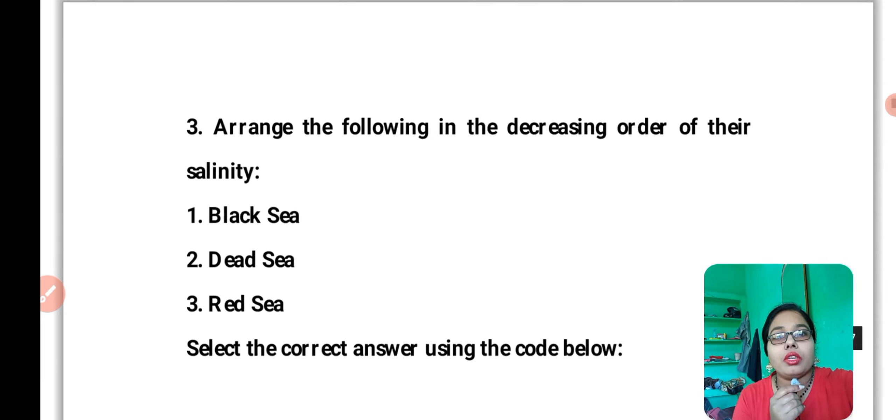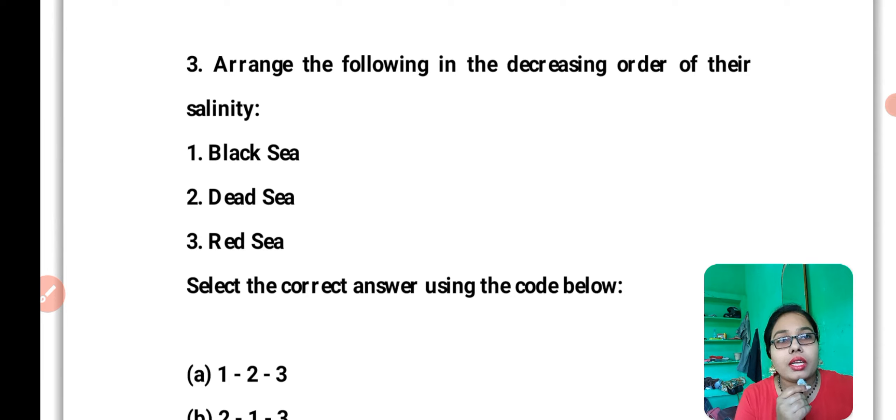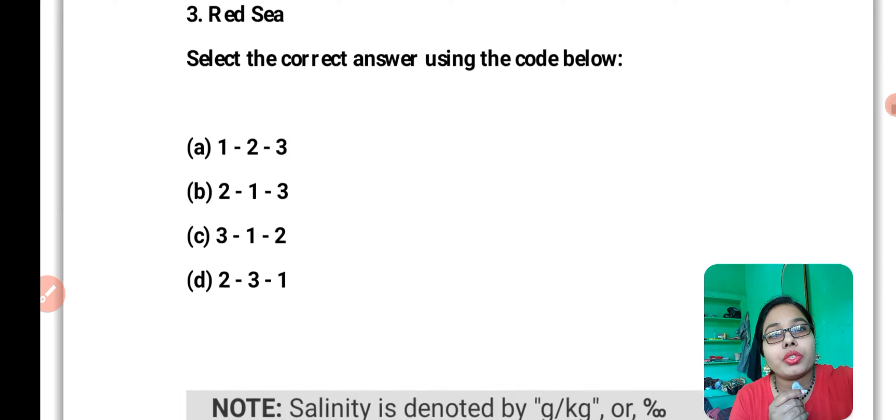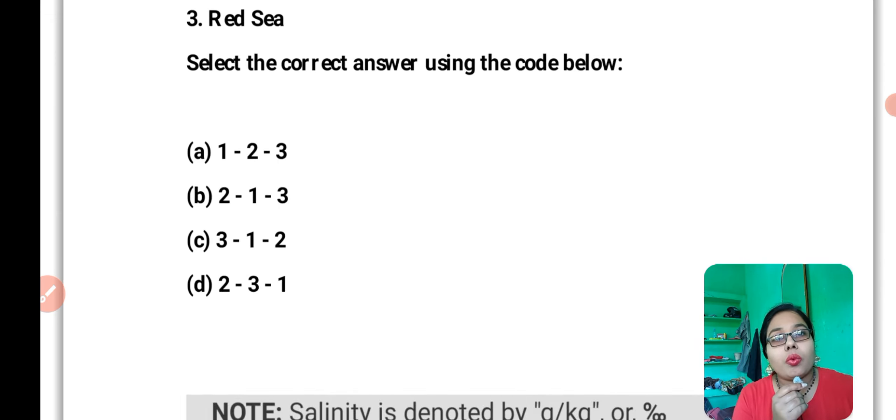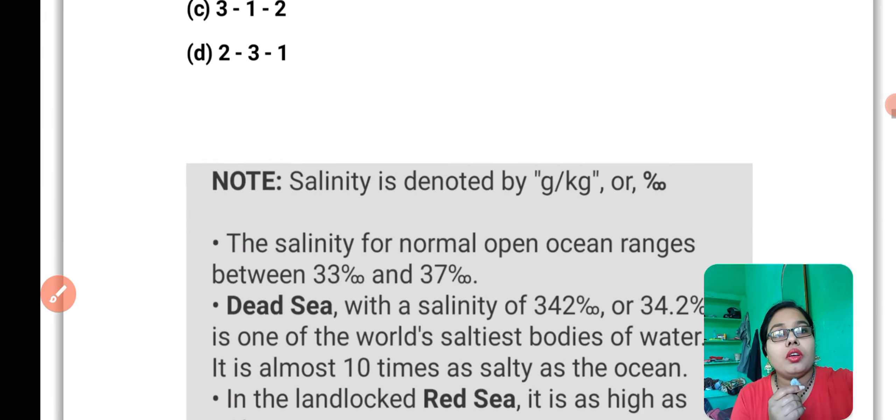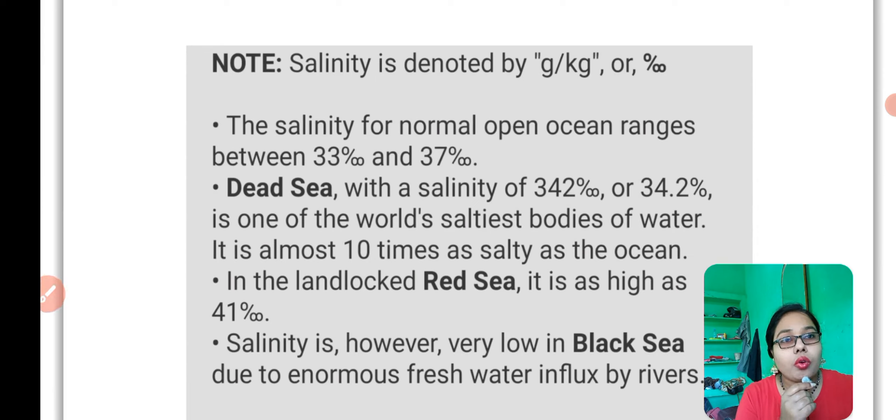Question number 3: Arrange the following in decreasing order of salinity - Dead Sea, Black Sea, and Red Sea. The correct answer is option 2: Dead Sea, Red Sea, then Black Sea. The salinity for normal open ocean ranges between 33% and 37%. Dead Sea with salinity of 34.2% is one of the world's most saline bodies of water.